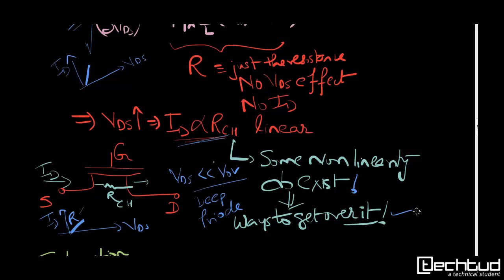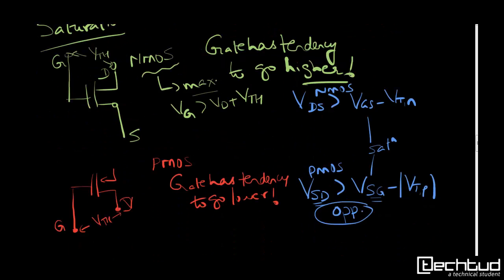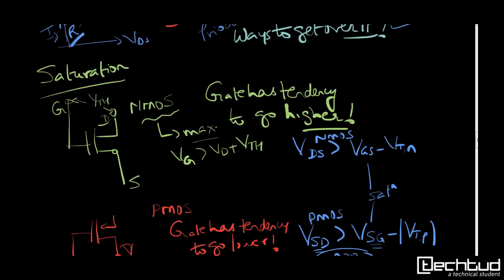Coming to the saturation region, how we can easily see whether the transistor is in saturation or not, NMOS is in saturation or not, people get confused here. So easy ways, like in case of NMOS, the gate has a tendency to go higher potential compared to drain. So gate can get higher than drain potential by threshold voltage amount. So that is the tendency of a gate for NMOS.